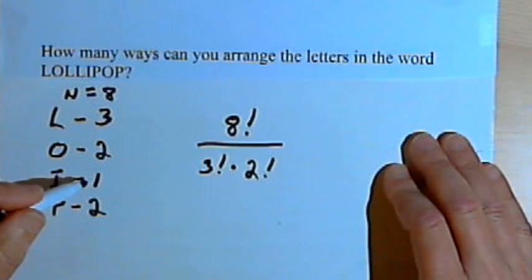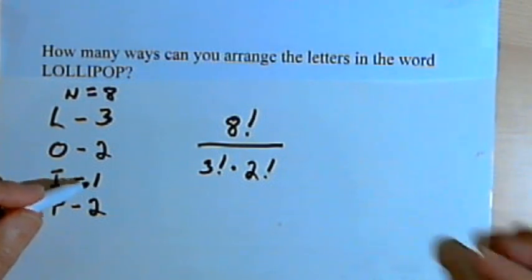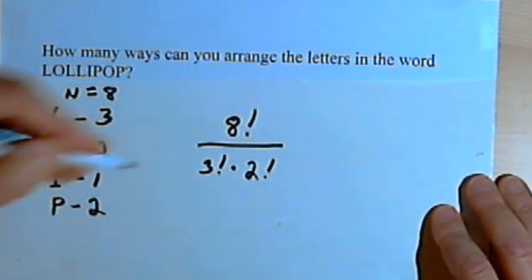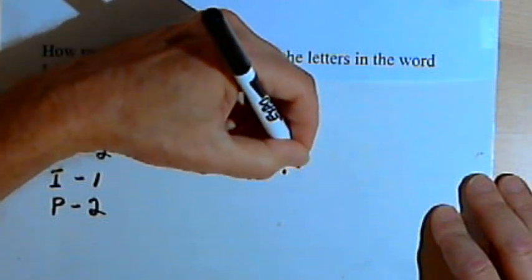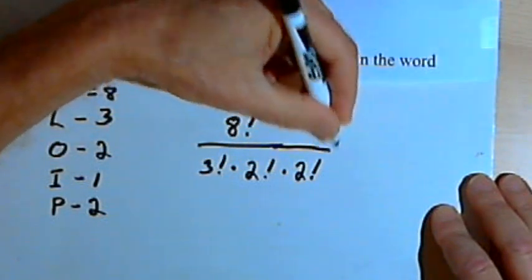I repeats once. We could put a 1 factorial in the denominator, but it wouldn't make much sense because 1 factorial is just 1. So we can leave that out. And then P repeats 2 times. So we also want to have 2 factorial as one of the numbers we're multiplying in the denominator.